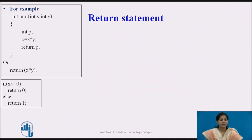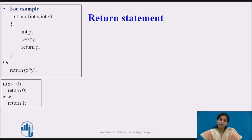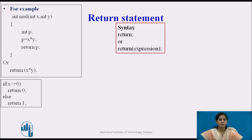Now let us see the syntax for the return statement. There are two ways to declare a return statement in a program. The first way is the simple return statement, which does not return any value to the calling function. When return is encountered, the control is immediately passed to the calling function. It is basically used to terminate the function without returning a value.